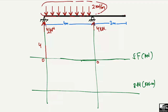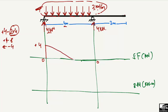The upward reaction is +4 kN, and the downward UDL is 2 kN/m over 4 meters, giving −8 kN total. So the shear force becomes: +4 − 8 = −4 kN. The shear force diagram drops linearly from +4 to −4 over the 4 meter loaded span.